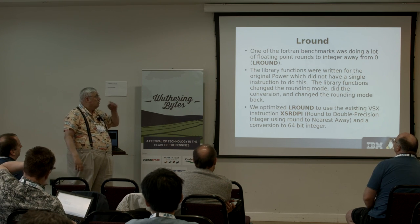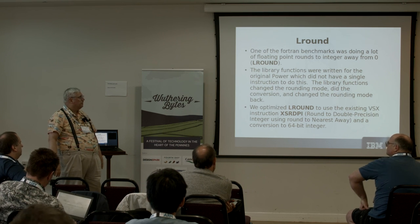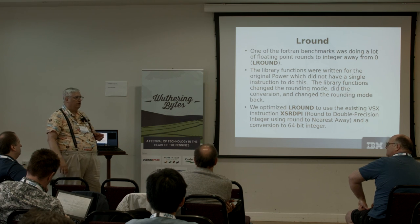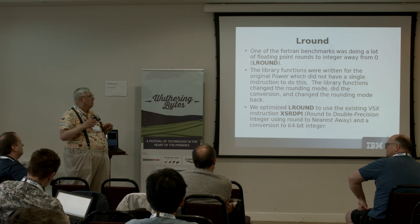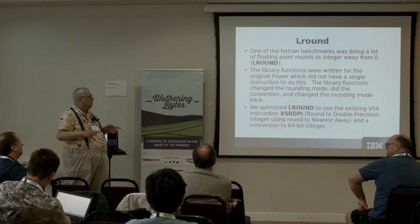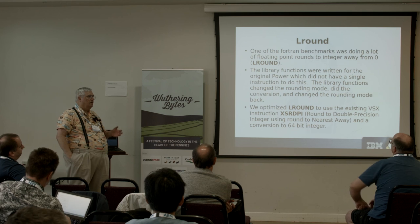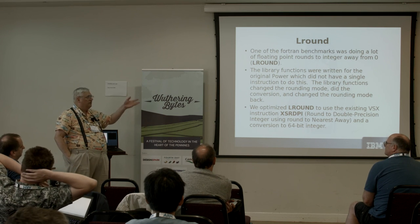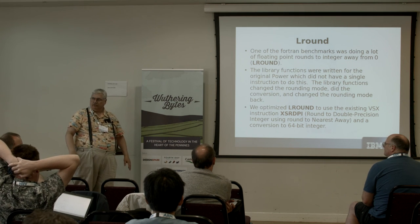One customer benchmark was a Fortran program doing what in C terms is L-round: convert to the nearest integer away from zero but keep it in floating point. It turned out there was an instruction in Power7 that we missed back then. We added it now and it helps that particular benchmark and anyone else using that particular code pattern.